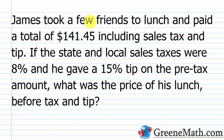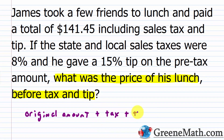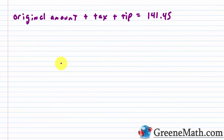Let's look at another problem. James took a few friends to lunch and paid a total of $141.45, including sales tax and tip. The state and local sales taxes were 8% and he gave a 15% tip on the pre-tax amount. What was the price of his lunch before tax and tip? This sets up similarly: you have a pre-tax, pre-tip original food amount, plus the tax, plus the tip, which equals $141.45.